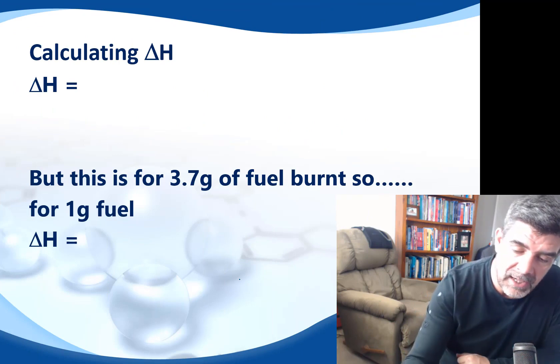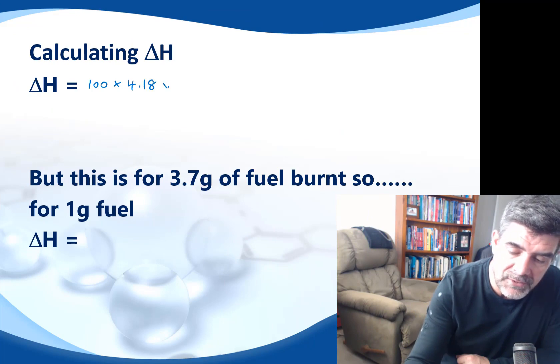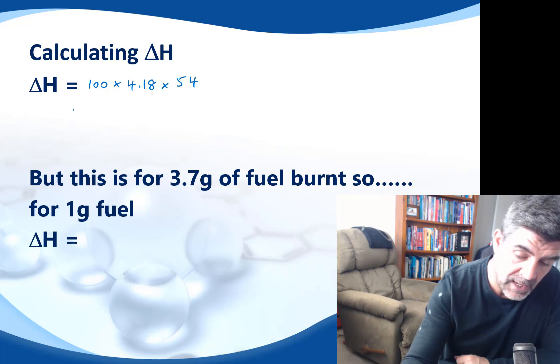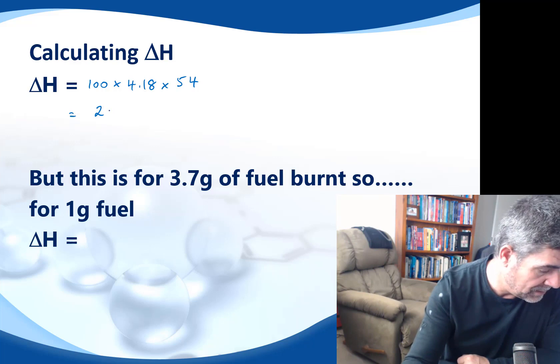Just to recap on that, the calculation, we had our mass, which was 100. We multiplied that by 4.18, which was our specific heat, and then by 54. And when we do that, we get a number of 22572 joules.